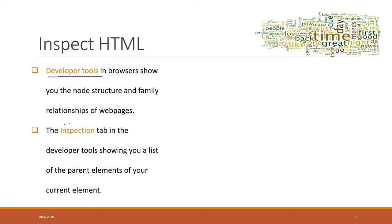Specifically, you're looking at the inspection tools within the developer tools, which allow you to show the HTML source code and also allow you to see the relationship of different tags.